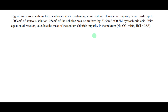25 cm³ of the solution was neutralized by 23.5 cm³ of 0.2 molar hydrochloric acid. With the equation of reaction, calculate the mass of the sodium chloride impurity in the mixture. We are given the relative molecular mass of Na₂CO₃ as 106, and that of hydrochloric acid as 36.5.